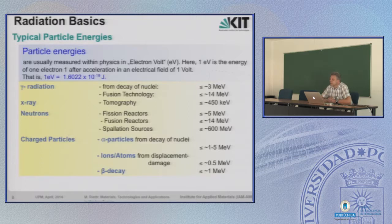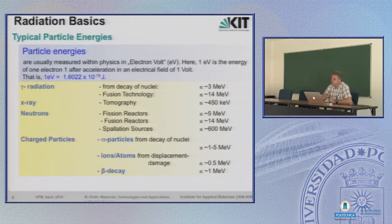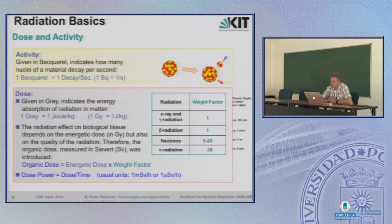Neutrons in fission reactors are in the range of 5 MeV, and in fusion reactors 14 MeV. Spallation sources — very specific sources for neutron production — have very high energies, 600 MeV. Charged particles such as alpha particles or helium nuclei are only 1 to 5 MeV. Single ions from atoms by displacement damage are in the range of 500 keV. Beta decay, which produces electrons, is in the range of 1 MeV.